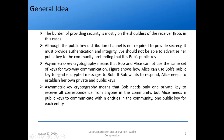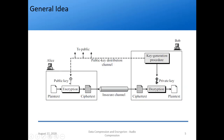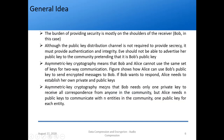Alice can use Bob's public key to send encrypted messages to Bob. But if Bob wants to respond to Alice, Alice needs to establish her own private and public keys. Asymmetric key cryptography also means Bob needs only one private key to receive all correspondence from anyone in the community — if Alice or Eve wants to send to Bob, Bob's key is always used; only the message and resulting ciphertext change.